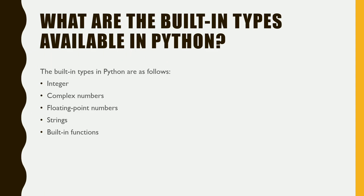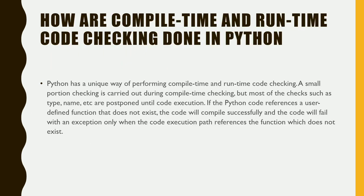The next question: what are the built-in types available in Python? The built-in types in Python are: integers, complex numbers, floating point numbers, strings, and built-in functions.